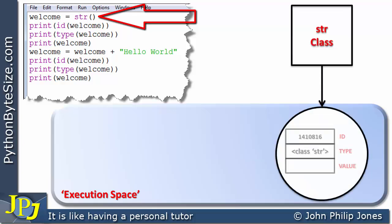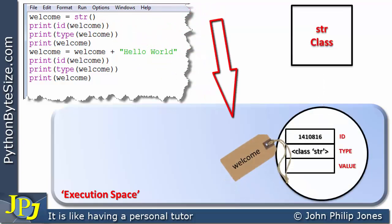From the string class we derive an instance, an object, and we label it with welcome. If we quickly look we can see it has an ID, a type, and it has a value, and you can see the value is suggesting that this particular instance of the string class is an empty string.